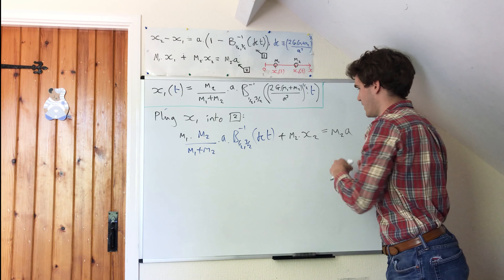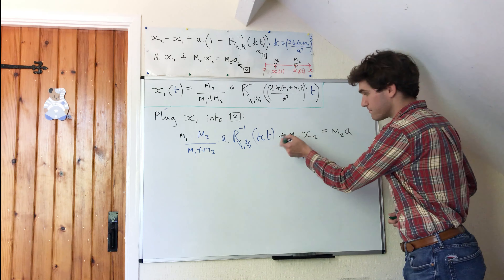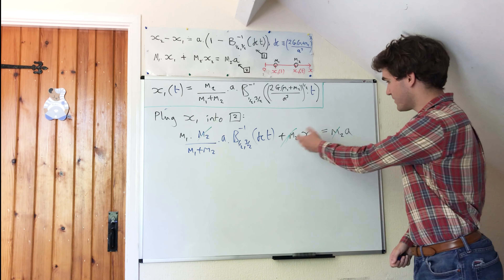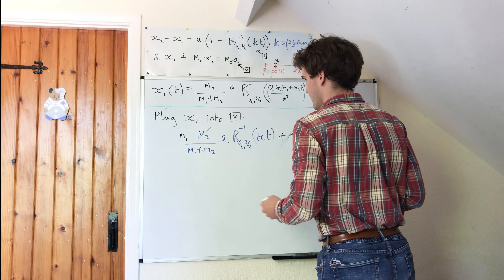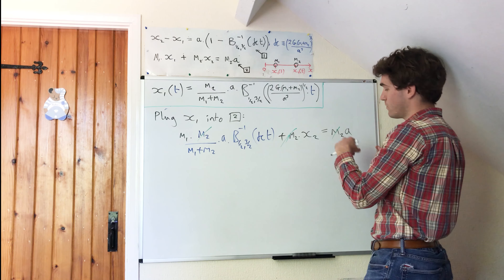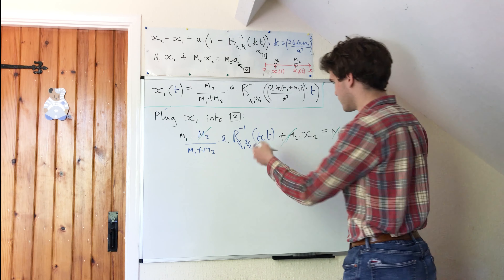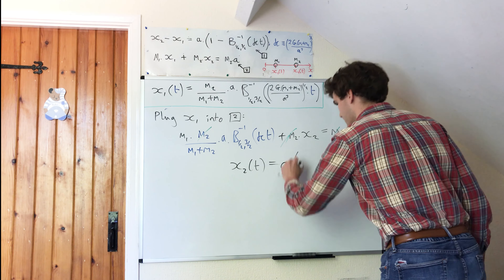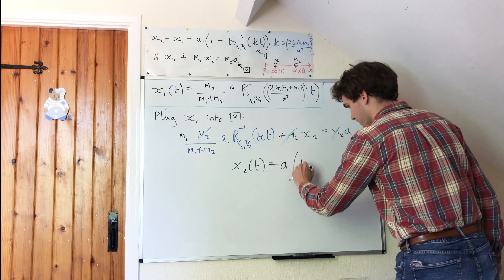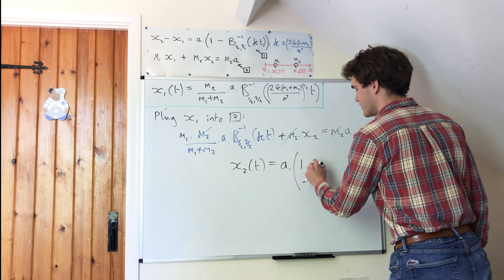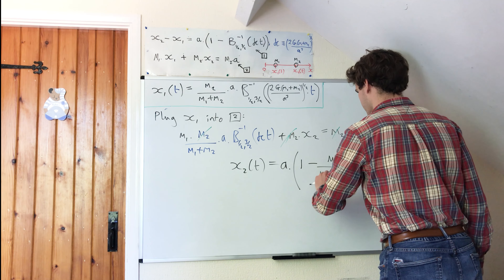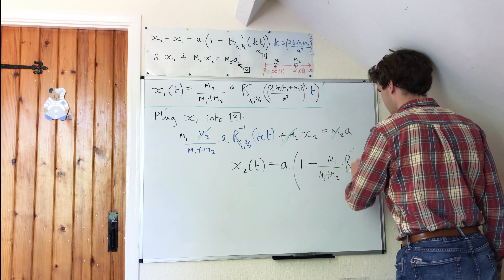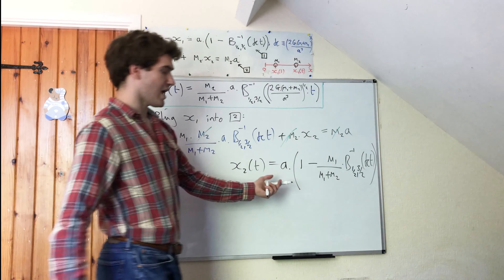We just need to put this term onto the other side and then solve for x2. We can already see that the m2s cancel very nicely, so x2 is essentially naked on this side and very easy to solve for. After dragging this term to the other side and factoring out a from the brackets, you end up with x2 of t being equal to a times the big open bracket: a contribution of plus one, minus m1 over m1 plus m2 times the inverse incomplete beta function, half three over two, of kappa times t. And that is our position of mass two.